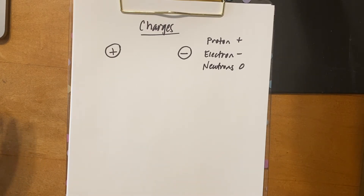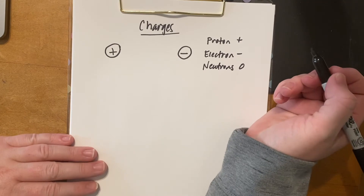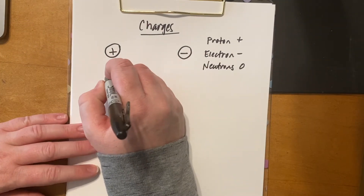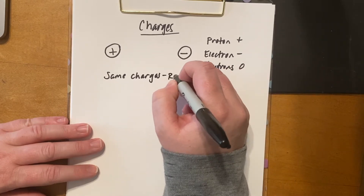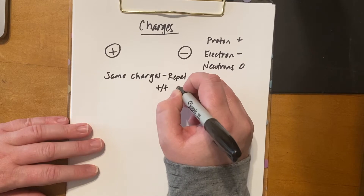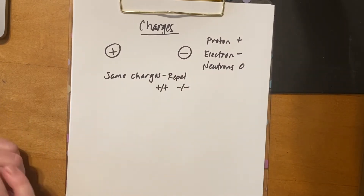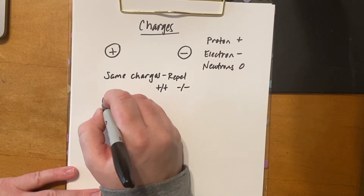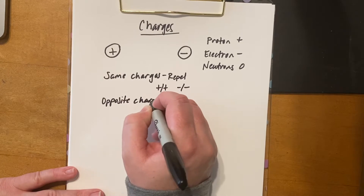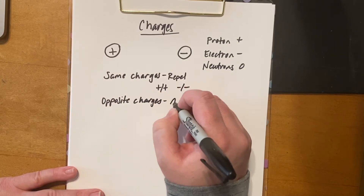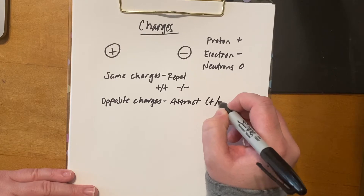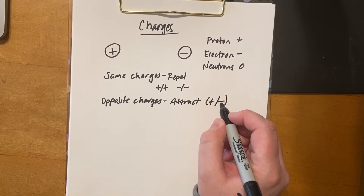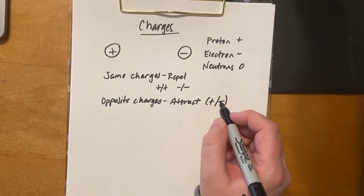If an object has charges, those charges will interact in a couple of different ways. If they're the same charges — both positive or both negative — they will push each other away; they'll repel. If the charges are opposite, they will attract. Since there are only two types of charges, attraction happens when you have one positive and one negative charge.